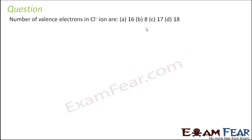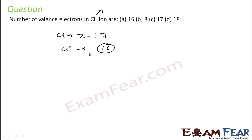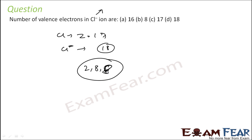Number of valence electrons in Cl⁻ — how many? Chlorine's atomic number is 17. Cl⁻ means it has gained one electron, so the number of electrons will be 18. The electronic configuration is 2, 8, 8. The number of valence electrons is 8, because the outermost shell has 8 electrons.